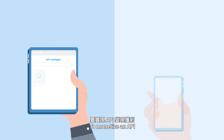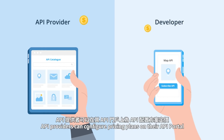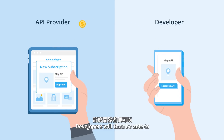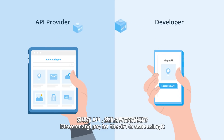To monetize an API, API providers can configure pricing plans on their API portal. Developers will then be able to discover and pay for the API to start using it.